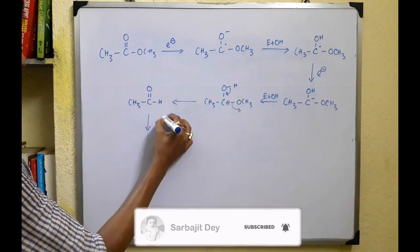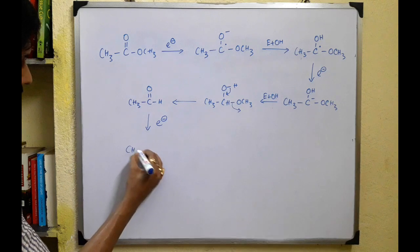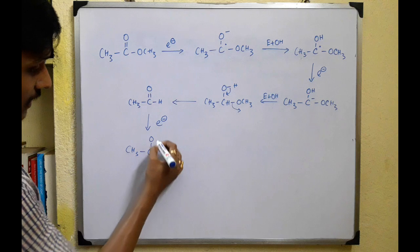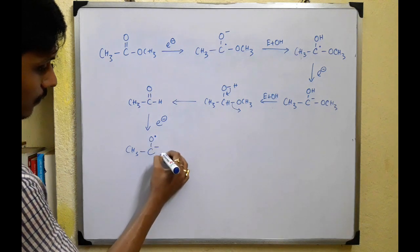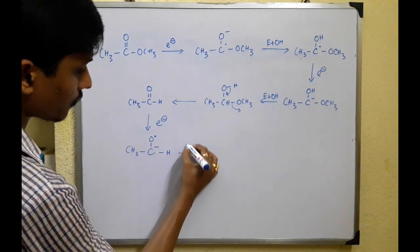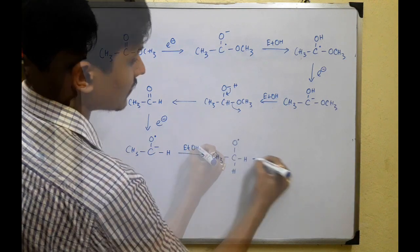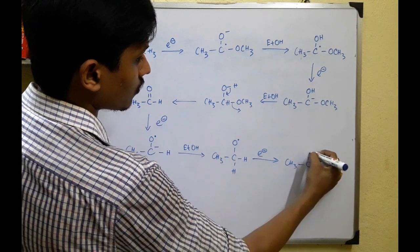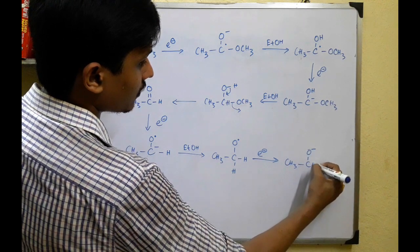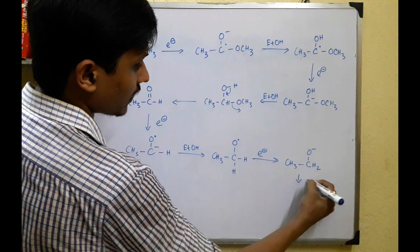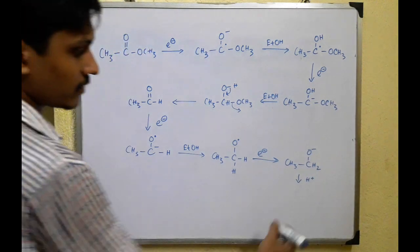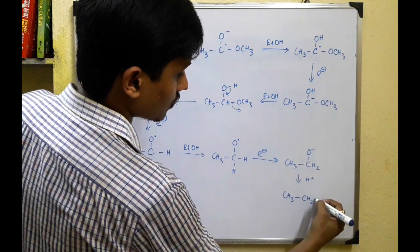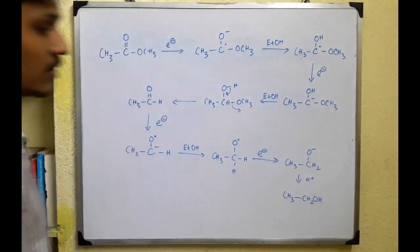The aldehyde intermediate then undergoes the same reduction sequence: first, addition of an electron to form a ketyl radical anion; then protonation; then it accepts a second electron to form the alkoxide. Finally, addition of an acid at the end of the reaction gives the final product — an alcohol.